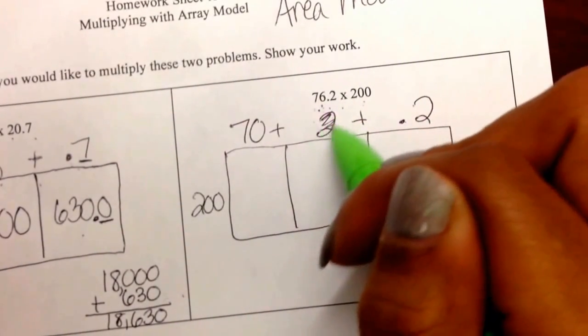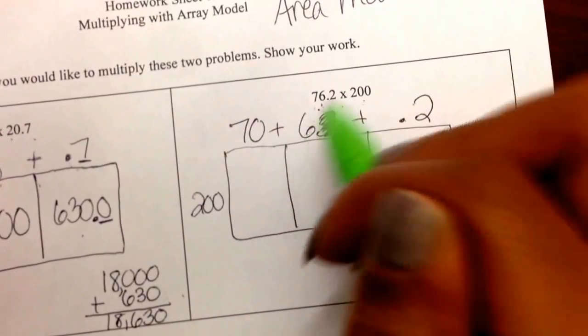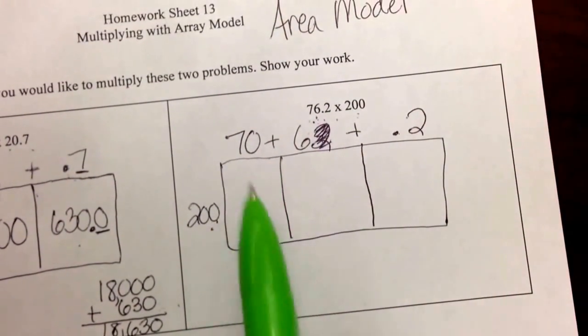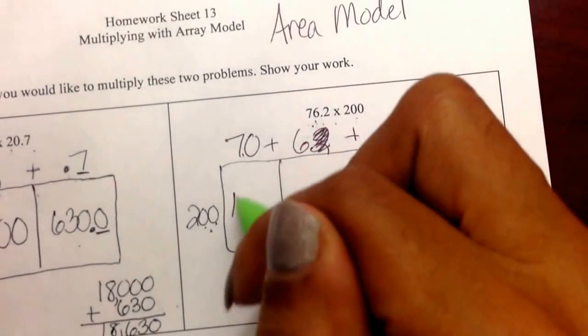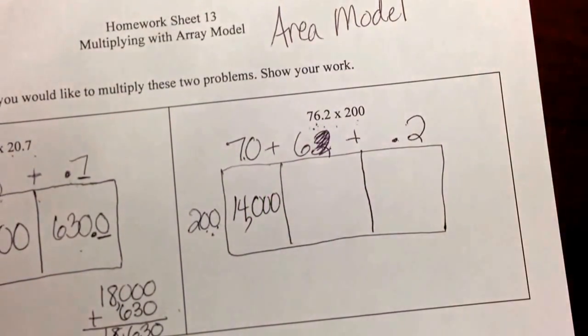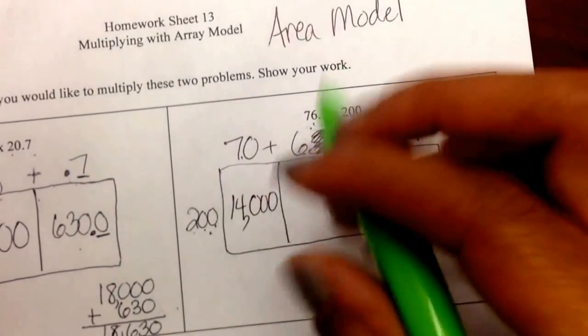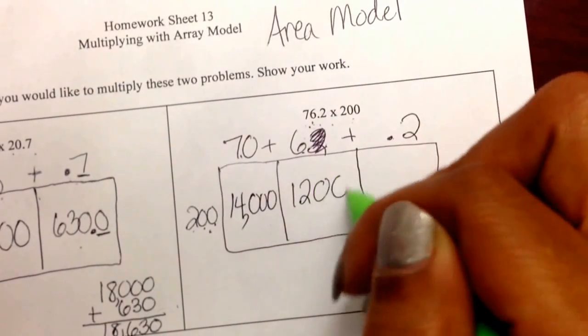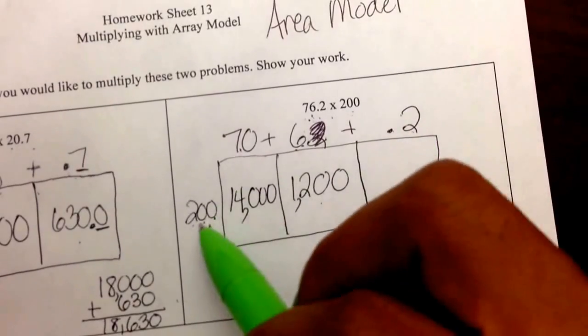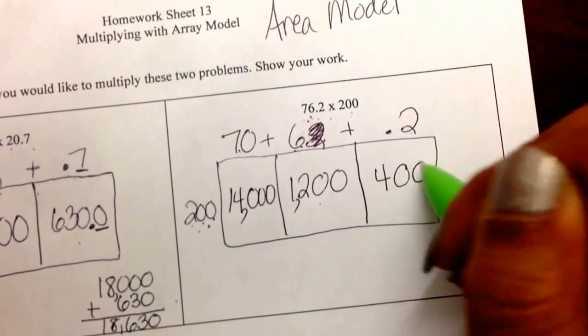Oh, little mistake. It should be 6 ones. Excuse me. And then I'm going to multiply now that my numbers are very friendly times 200. 2 times 7 is 14 plus 1, 2, 3 zeros, 14,000. 6 times 2 is 12 plus 2 zeros, so 6 times 200 is 1,200. 2 times 2 is 4 plus 2 zeros.